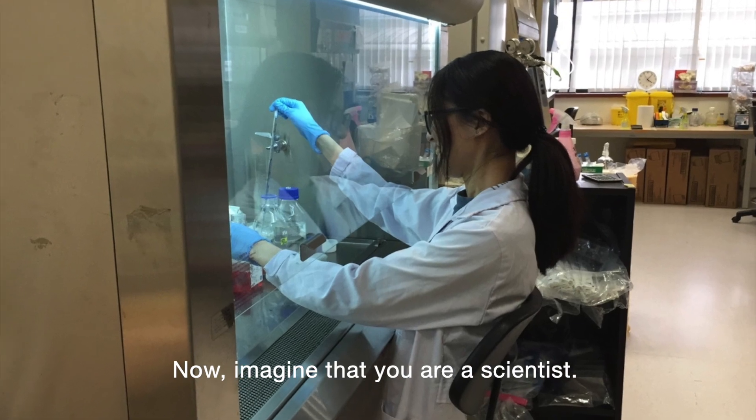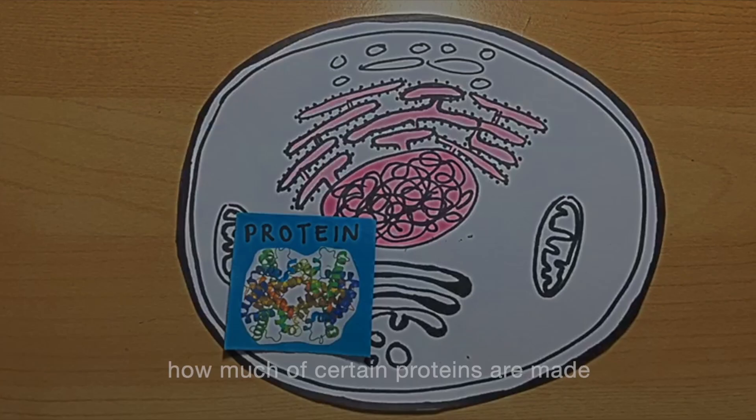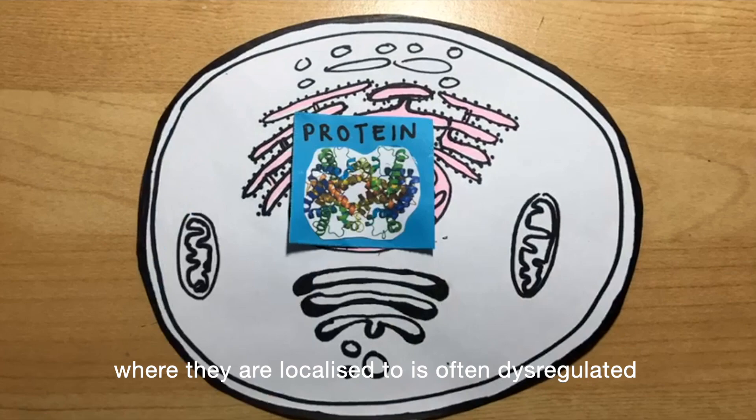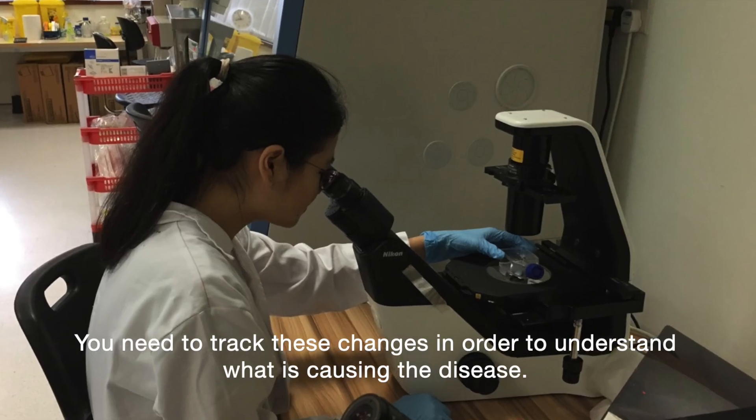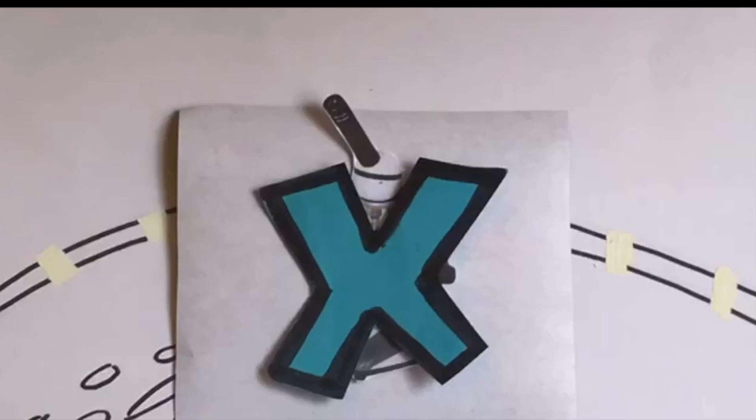Now, imagine that you are a scientist. During a disease like cancer or diabetes, how much of certain proteins are made, or where they are localized to, is often dysregulated. You need to track the changes in order to understand what is causing the disease. But the problem is that proteins cannot be easily observed under the microscope. So what can you do?